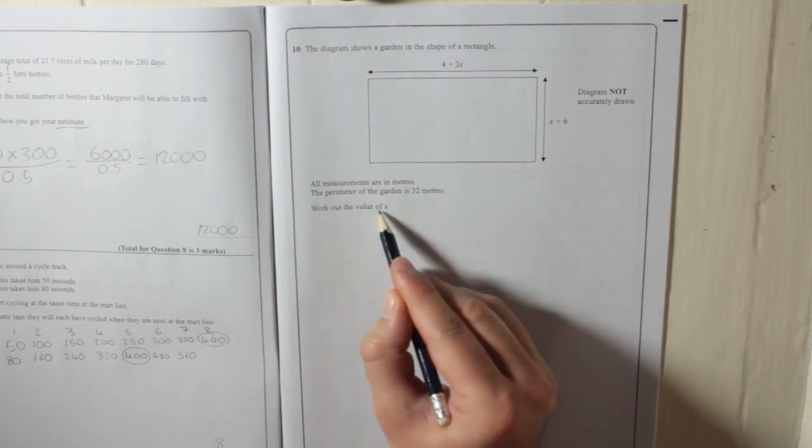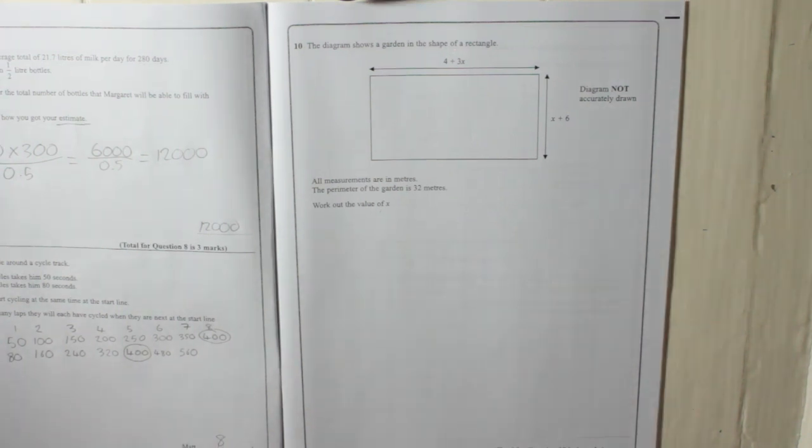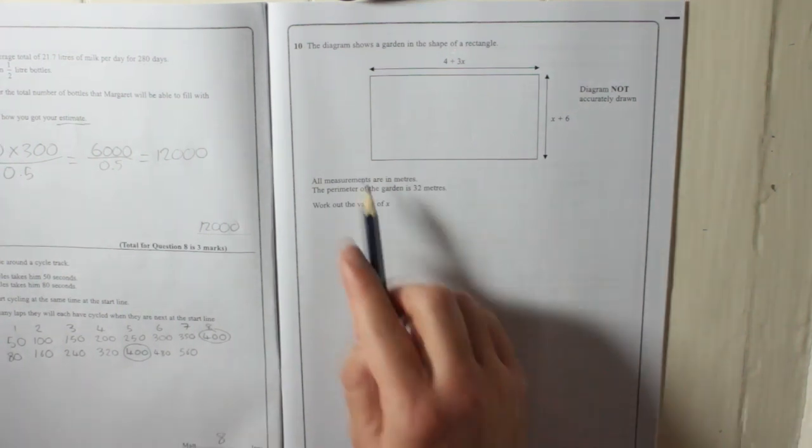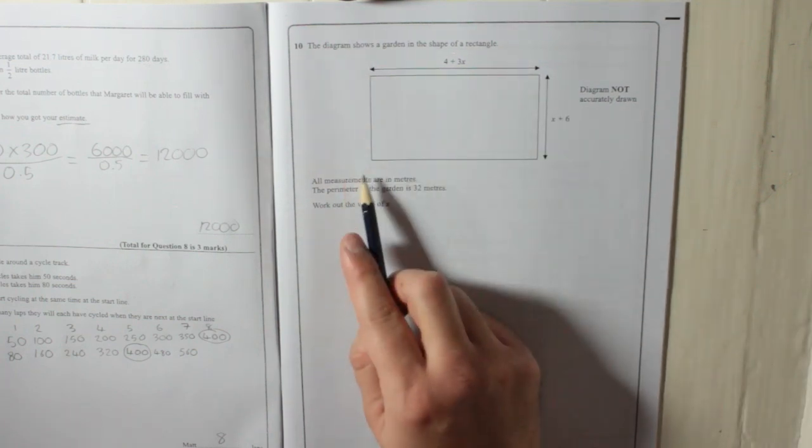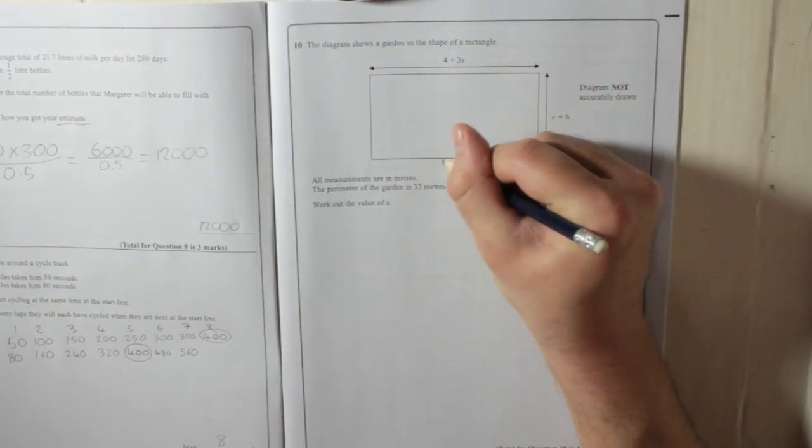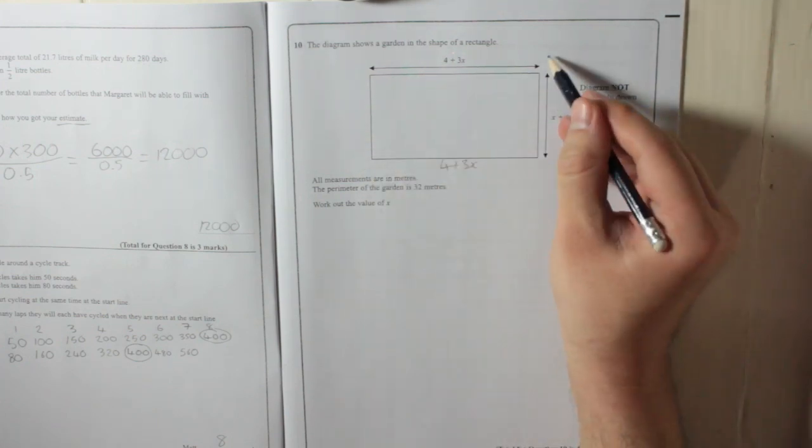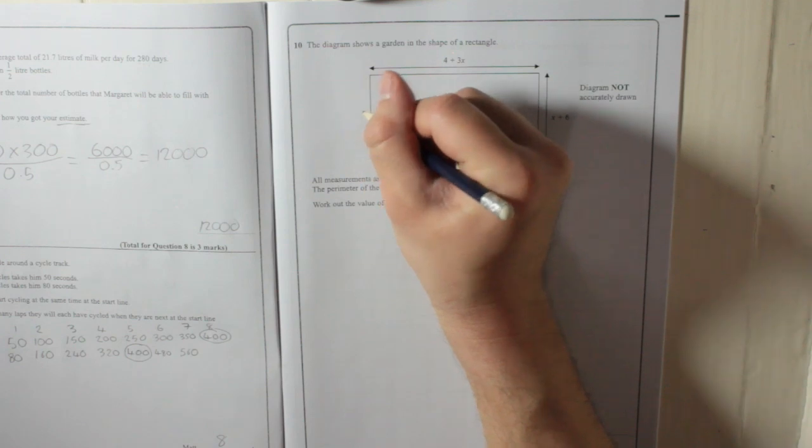The perimeter of the garden is 32 meters. Work out the value of x. Now remember, perimeter, what does that mean? That means all the way around. How long is that? Same as that. 4 plus 3x. How long is that? Same as that. x plus 6.